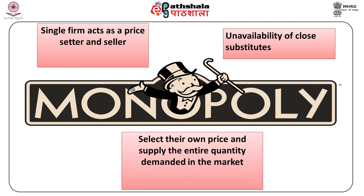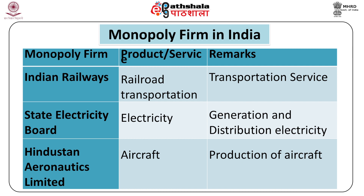In monopoly, a single firm acts as a price setter and seller. Monopoly firms are called price setters because they select their own price and supply the entire quantity demanded in the market. The monopolist has an effective control over the market due to the unavailability of close substitutes for the monopoly product. Examples of monopoly in India are reported in table 2.